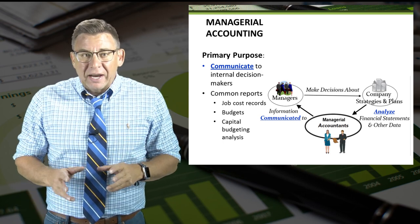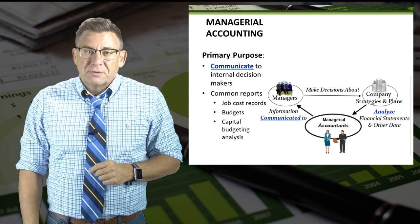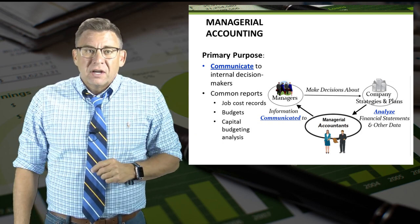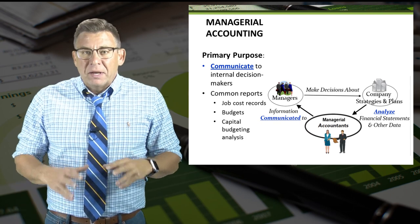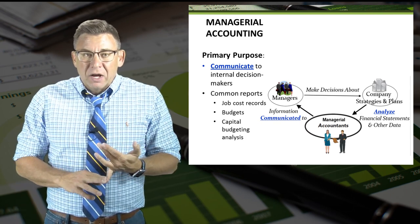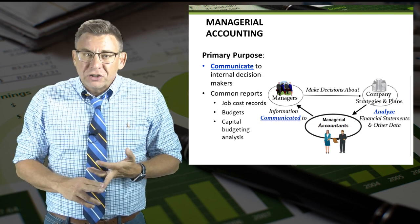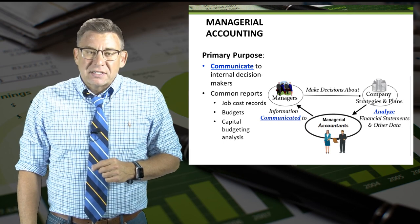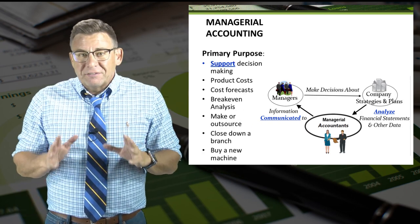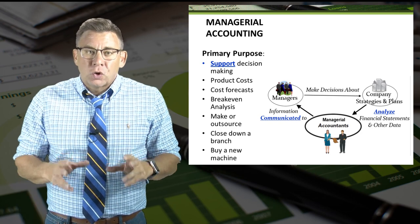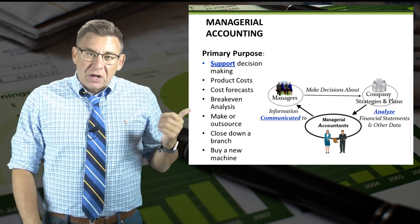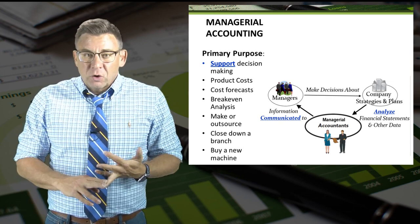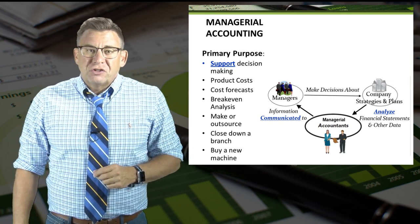Managerial accountants communicate the analysis to internal decision makers. Although there are no set of standard reports, there are some common managerial accounting reports, like job cost records, bill of materials, budgets, variance analysis, and capital budgeting analysis, to name a few. The purpose of managerial accounting is to support internal decision making. Some of the common decisions addressed in managerial accounting are determining product cost, forecasting cost, and various short-term decisions, to name a few.